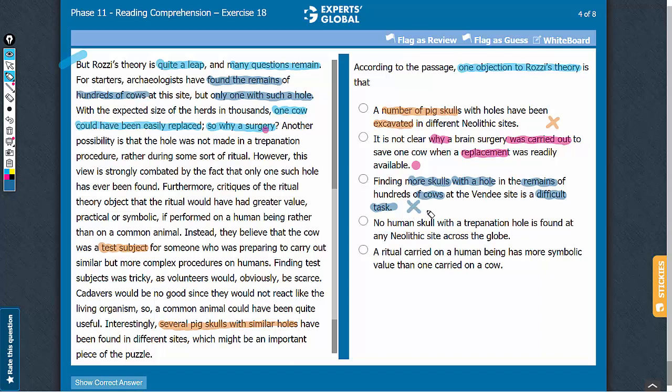Answer choice D: Human skull with trepanation hole. Rosy's theory is related to a hole in an animal skull, so lack of human skulls with trepanation holes has no bearing on Rosy's theory and it cannot be the objection as well. So this answer choice can be eliminated.